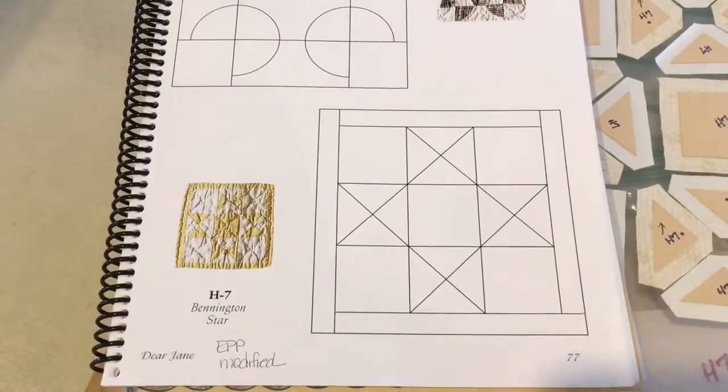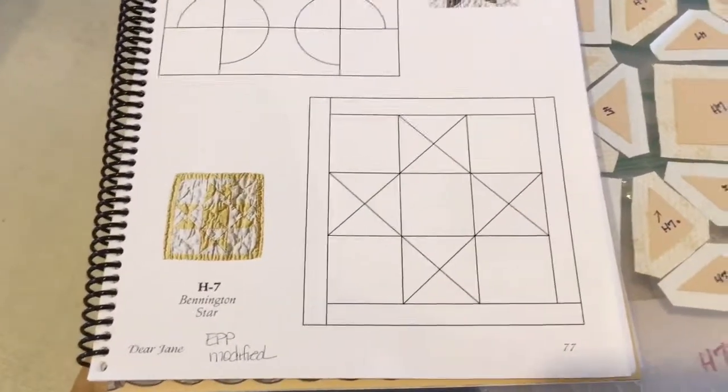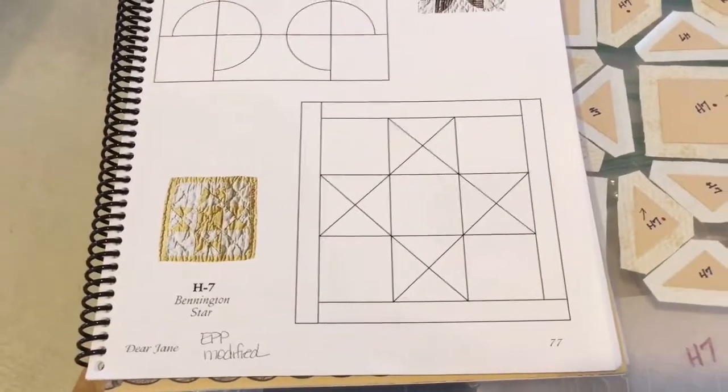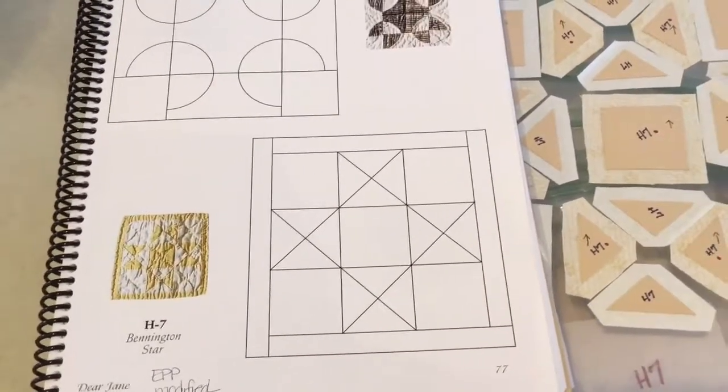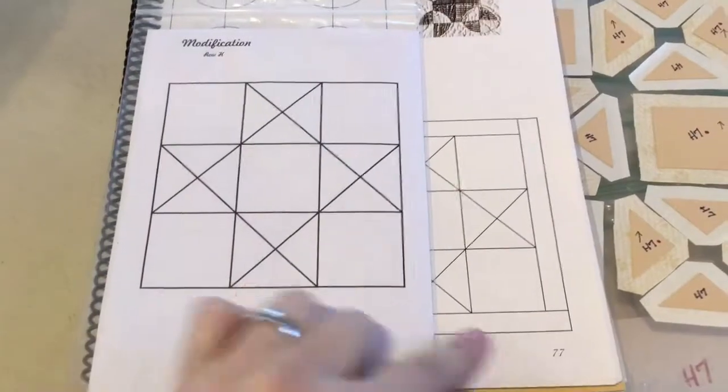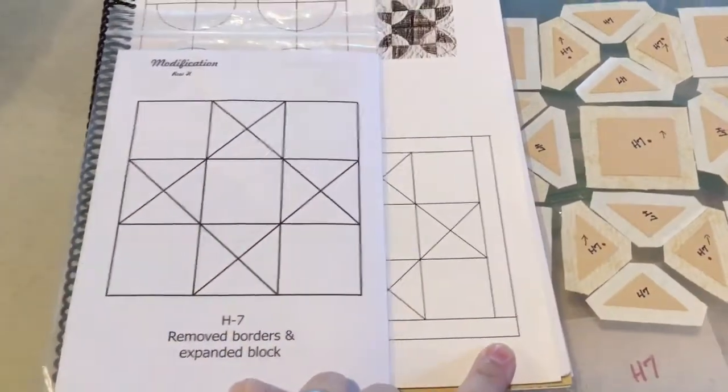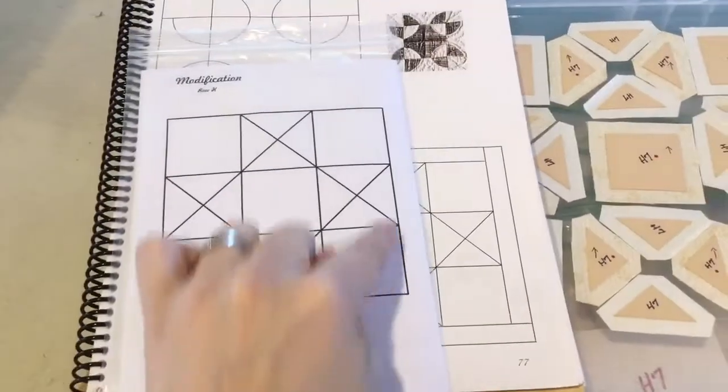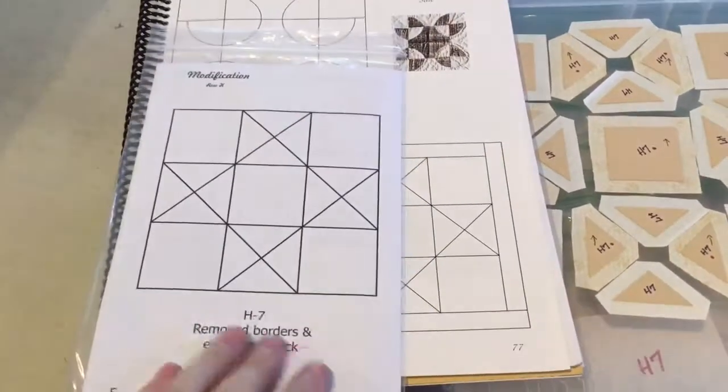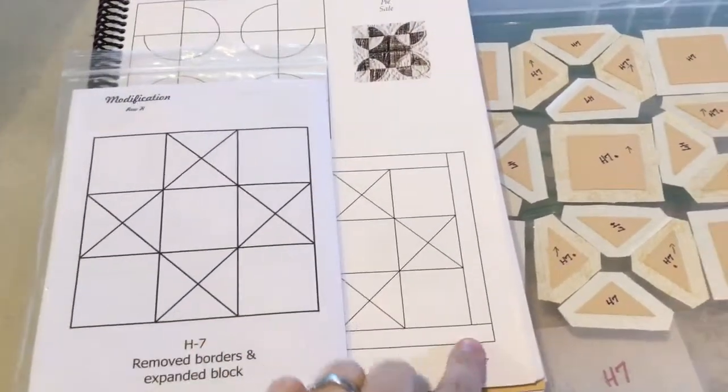This is the assembly video for the H7 block, which has been modified for English paper piecing. The only modification is that it eliminated the outer border, because when you put sashing on it, it already borders and frames it nicely. This way you're not repeating effort, and from a visual standpoint it gives you a bigger piece to work with.